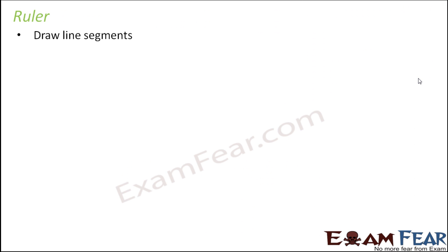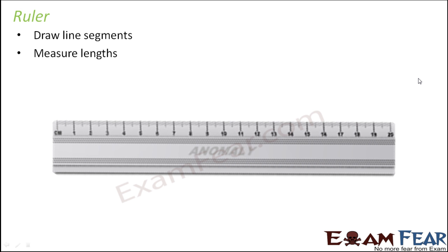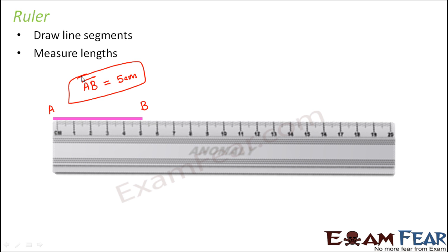Let's start with the ruler, which is primarily used to draw line segments. For example, if you want to draw a line segment of length 5 centimeters, you place the ruler and draw a line, naming it AB, ensuring the length of AB equals 5 centimeters. You can also measure any given line segment by placing the ruler below it. Always make sure the beginning of the line segment is at the zero of the scale so that you measure it correctly.